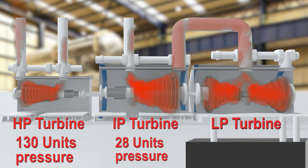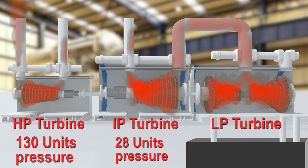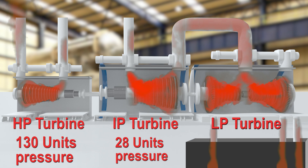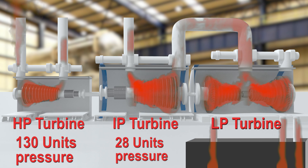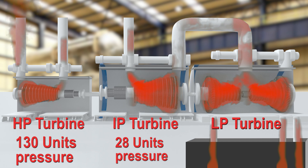The HP Turbine handles 130 units of pressure and the IP Turbine handles 28 units of pressure. Due to this, the HP Turbine is the smallest in size, as high-pressure steam requires lesser volume. The LP Turbines are the biggest in size because they have the lowest steam pressures, which require a bigger area to handle the steam flow.